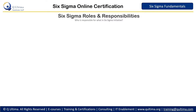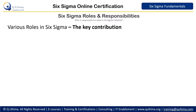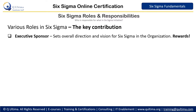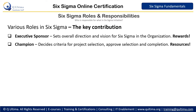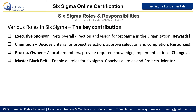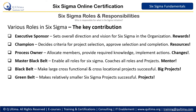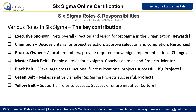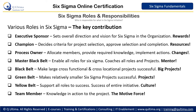We will understand the role of each individual by one keyword. The executive sponsor has the capability to reward success. The champion provides resources for a successful project. The process owner enables changes on the floor. The Master Black Belt acts as a mentor of tools. The Black Belt does big projects whereas the Green Belt does projects. The Yellow Belt creates the culture in the organization, whereas the team member is the motive force behind Six Sigma.